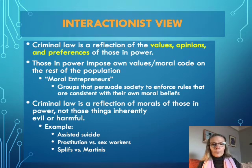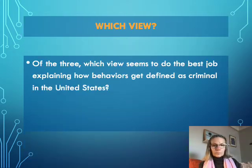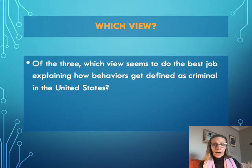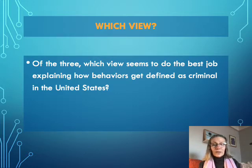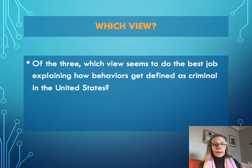Those are the three viewpoints the textbook offers to help us understand how crime is defined. Which view do you think does the best job of explaining how behaviors get defined as criminal in the United States? Is it the consensus view — reflecting what the majority wants? The interactionist view — reflecting the moral values of those in power? Or the conflict view — that those with economic power have the greatest say in determining what behaviors are defined as crimes?